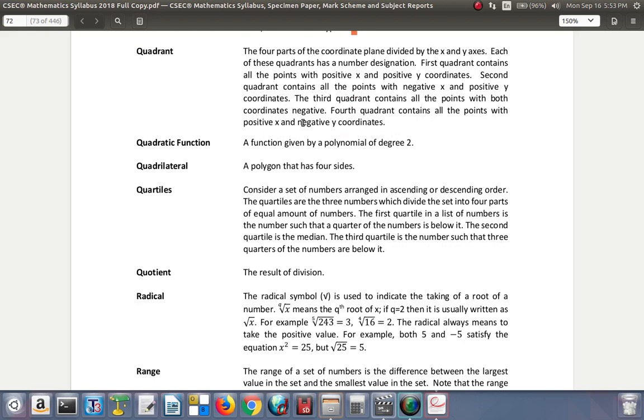Quadrant. The four parts of a coordinate plane divided by the X and Y axes. Each of these quadrants has a number designation. First quadrant contains all the points with positive X and positive Y coordinates. Second quadrant, all the points with negative X and positive Y. Third quadrant, all the points with both coordinates negative. And the fourth quadrant contains all the points with positive X and negative Y coordinates. You can look at a figure with all four quadrants in it.